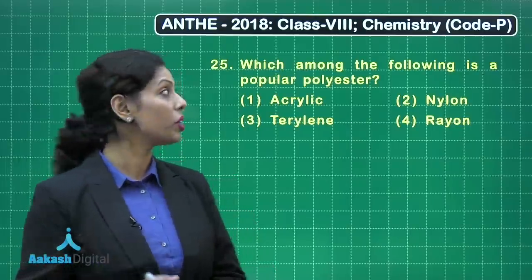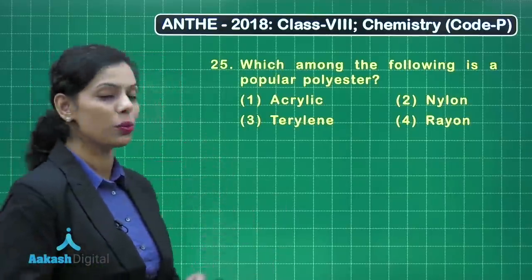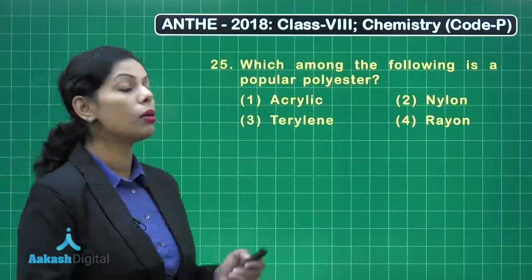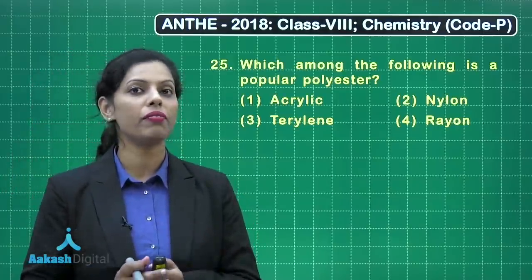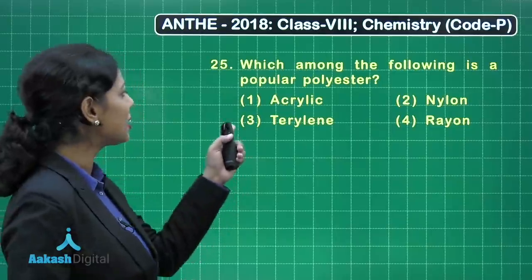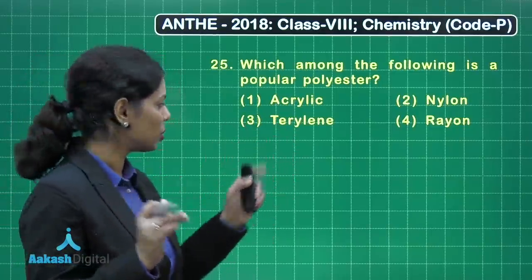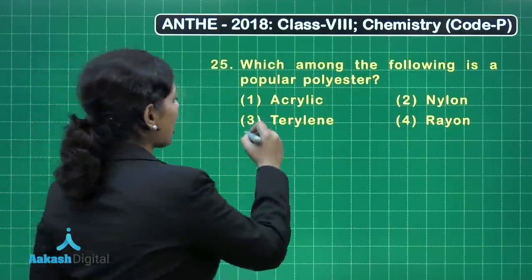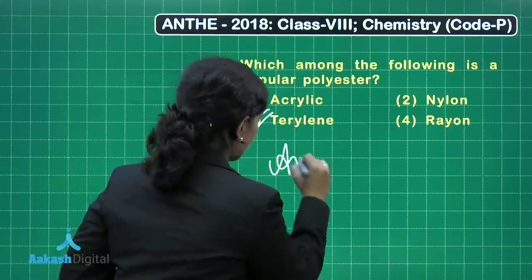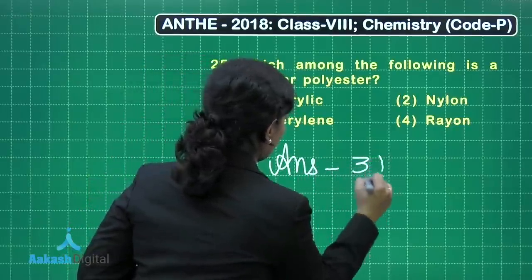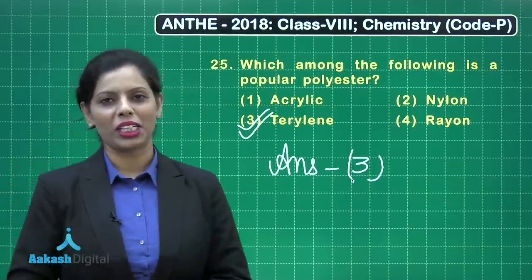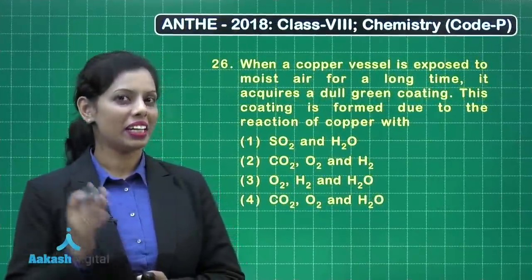In question number 25, which among the following is a popular polyester, we have to identify the example of polyester given in the options. Terylene, given in option 3, is the correct answer, so we can easily mark option 3 as correct.